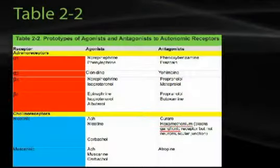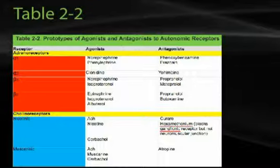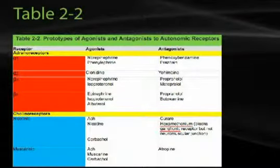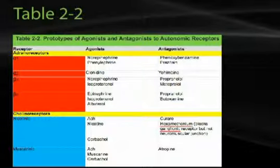Table 2-2 summarizes agonists and antagonists to various autonomic receptors. At the alpha-1 receptor, norepinephrine and phenylephrine act as agonists, whereas phenoxybenzamine and prazosin are antagonists. Alpha-2 agonists include clonidine, whereas yohimbine is a classical alpha-2 antagonist. Norepinephrine also works at the beta-1 receptor. Isoproterenol is another beta-1 agonist, whereas propranolol is a broad-spectrum beta antagonist at the beta-1 receptor, and metoprolol is a beta-1-specific antagonist. At the beta-2 receptor, epinephrine, isoproterenol, and albuterol serve as agonists, whereas propranolol and butoxamine are beta-2 antagonists.